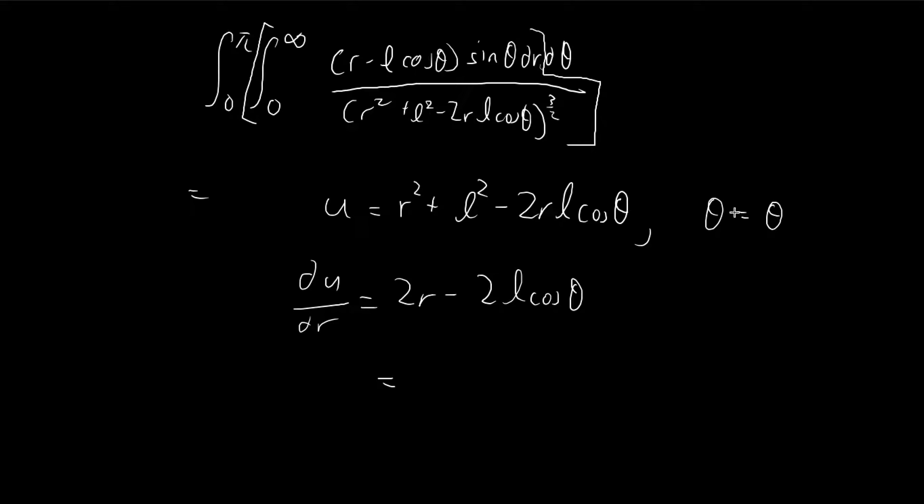So usually when you do a substitution, you define the two variables to be equal to something else. But in this case, I'm just going to keep the theta. And then if you do the Jacobian for this expression, you're just going to arrive at something that's resembling something we're doing just now. So it's perfectly legal to treat theta as a constant, and then to treat this inner integral as a regular single variable integral.